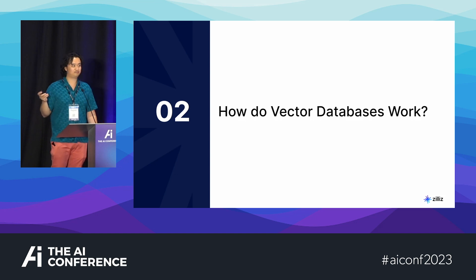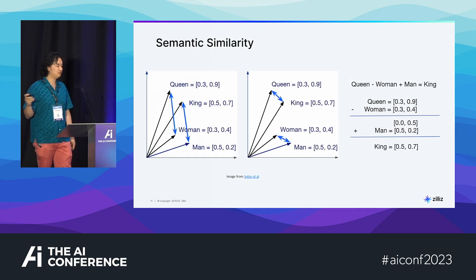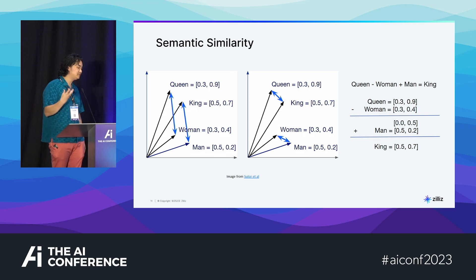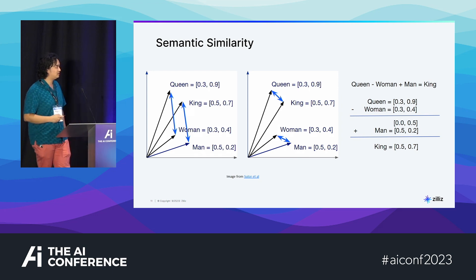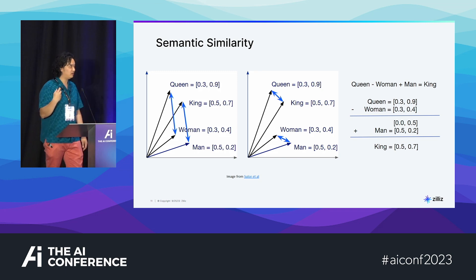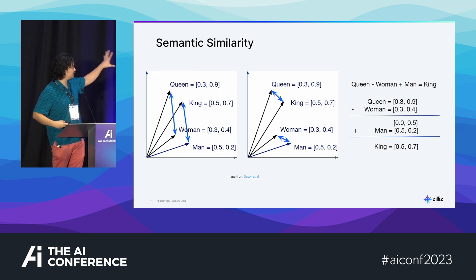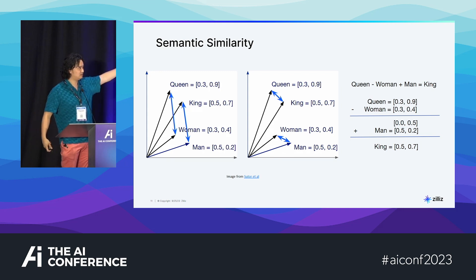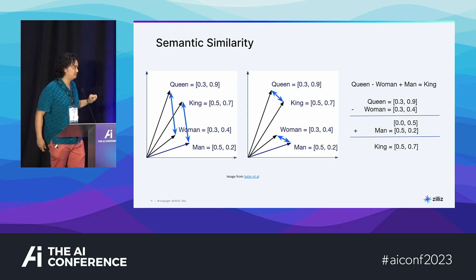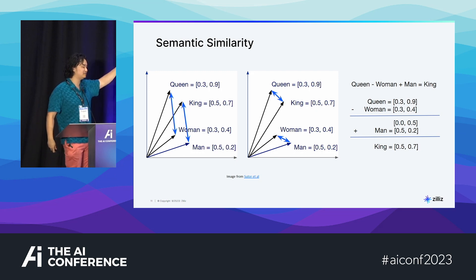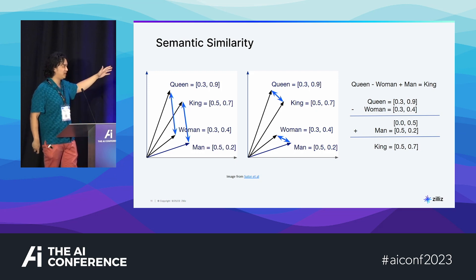So how do vector databases work? Vector databases work through semantic similarity — essentially how close are two words in meaning. Vector search allows you to do math on words. You can see on the screen I've got four words: queen, woman, man, and king. And I'm doing some math on them. You could probably look at this and say: queen minus woman plus man equals king.